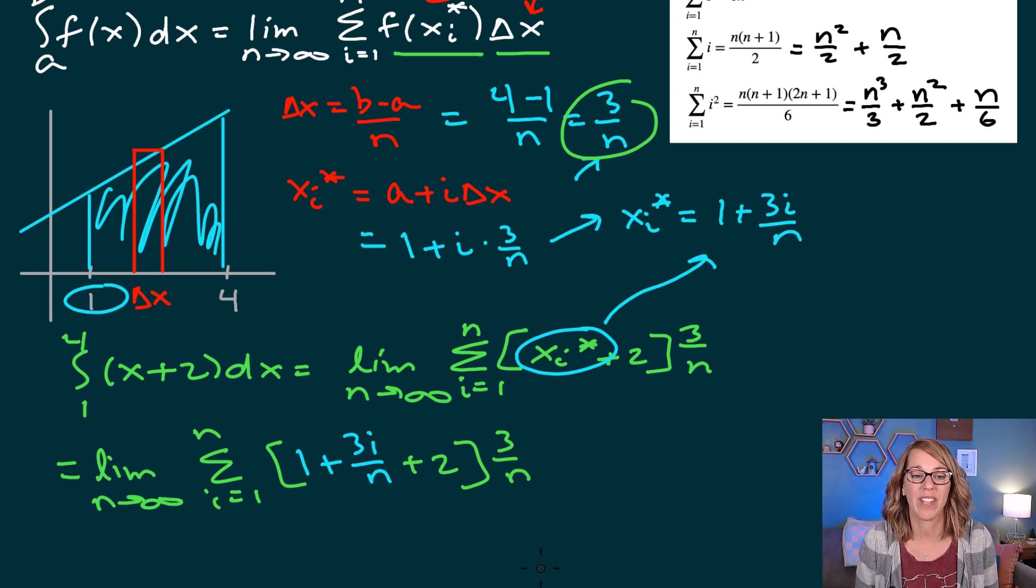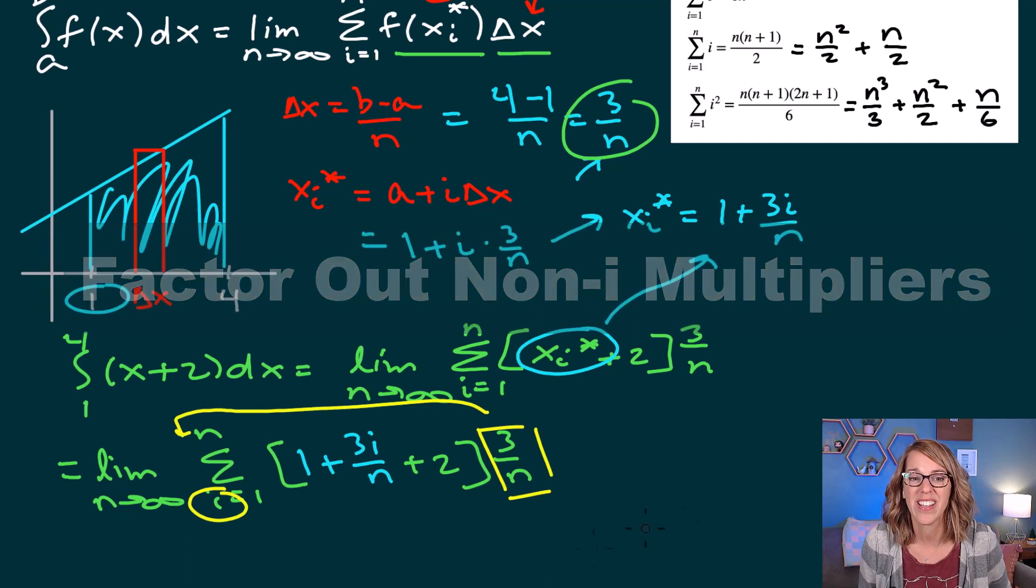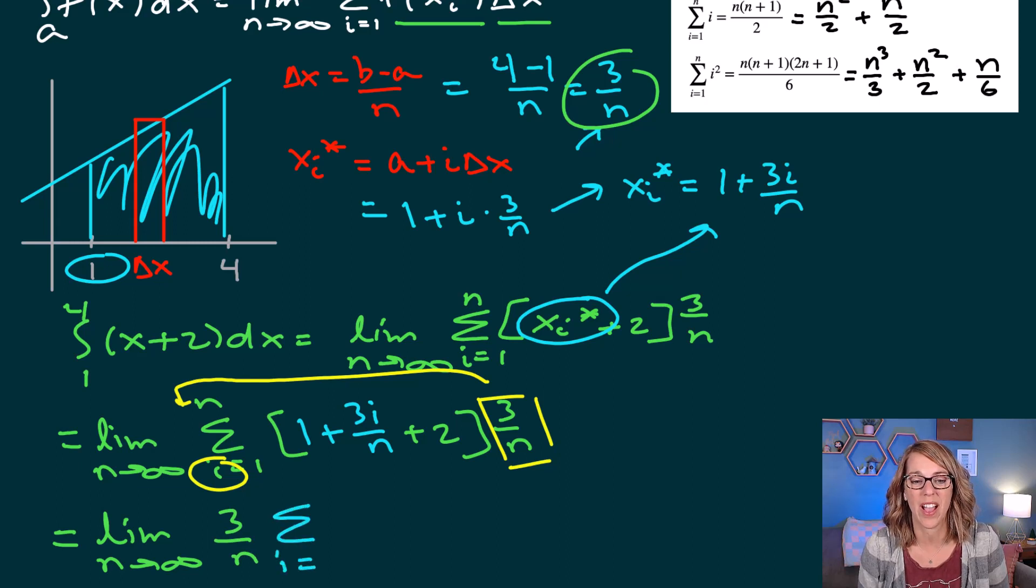Now my summation applies to anything with an i or a constant. That is not the case with this 3 over n. I'm going to bring that out in front, and that's going to simplify my life quite a bit. So now we've got the limit as n goes to infinity of, I'm going to bring that 3 over n out in front, and that's going to leave me with my summation i goes from 1 to n. I can add the 1 and the 2 together. So I get 3 plus 3i over n.